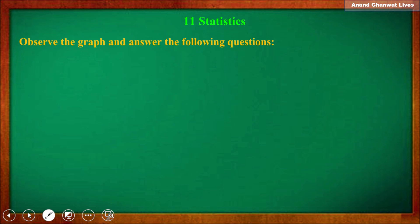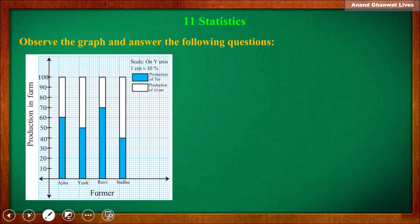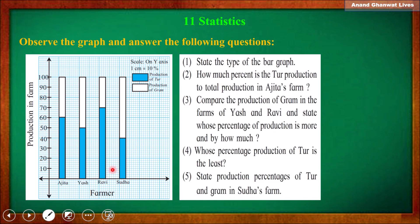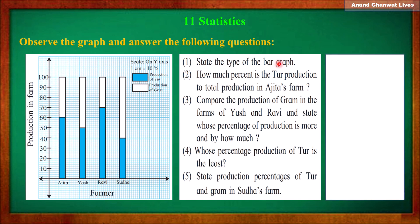Now let us observe the given graph of a percentage bar diagram and answer the following questions. In this graph, production for farmers is given in percentages — two crops: production of tur and production of gram. Question one: state the type of graph. Since the height of each bar is 100 and production is given in percentage, it is a percentage bar diagram.